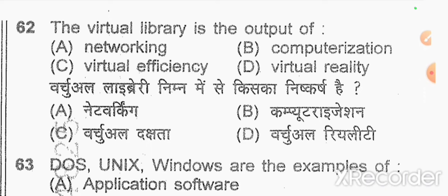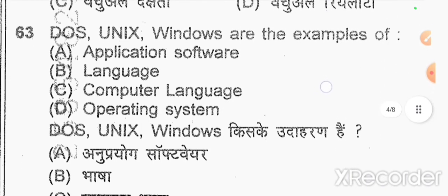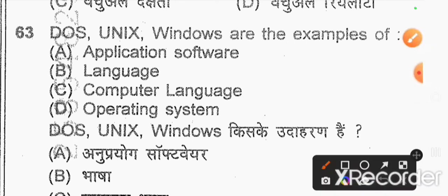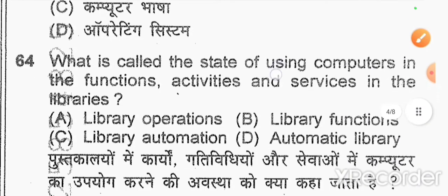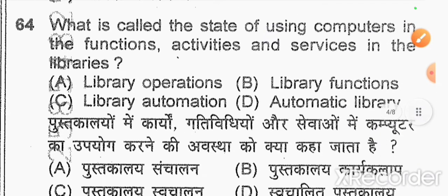Question number 63: DOS, Unix, and Windows are examples of — option D — operating system. Question number 64: what is called the state of using computers in the functions, activities, and services in libraries? Option C — right answer: library automation.